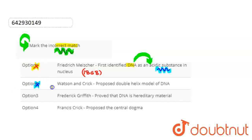Third option, we have to see the third option. Frederick Griffith proved that DNA is hereditary material. Right? This statement here is incorrectly matched. Alfred Hershey proved that DNA is hereditary material.